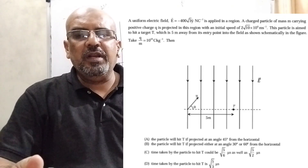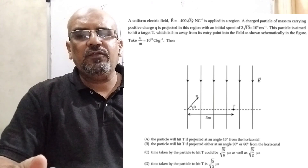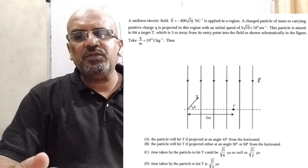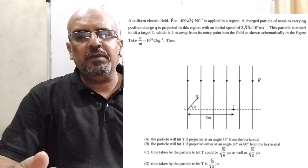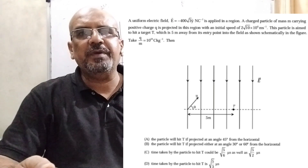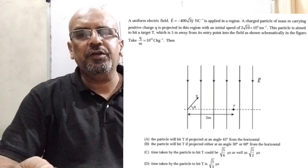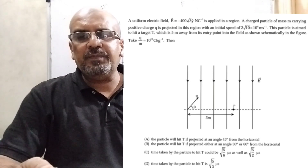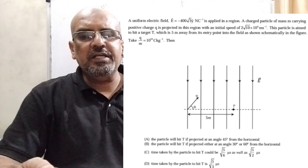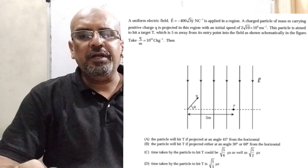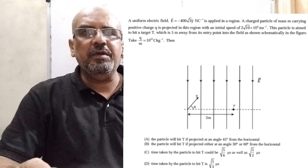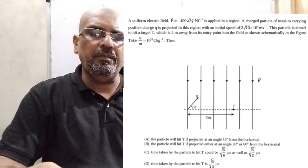Now here is the question. A uniform electric field E equal to minus 400√3 ŷ newton per coulomb is applied in a region. A charged particle of mass m carrying positive charge q is projected into this region with an initial speed of 2√10 × 10⁶ meter per second. This particle is aimed to hit a target T which is 5 meters away from its entry point into the field, as shown schematically in the figure. Take q/m equal to 10¹⁰ coulomb per kilogram.